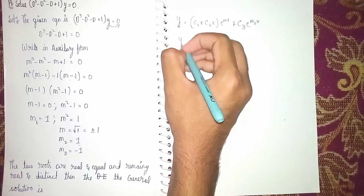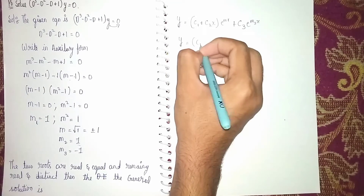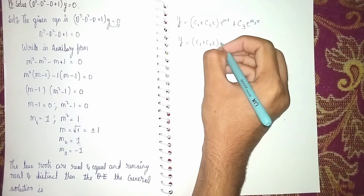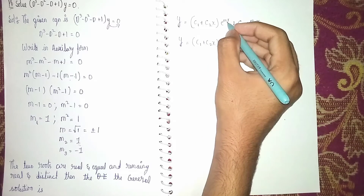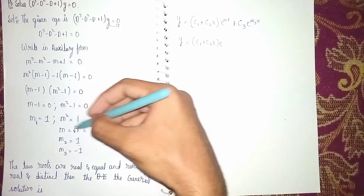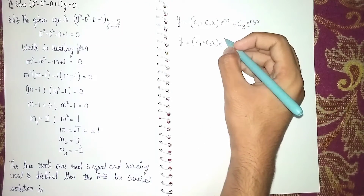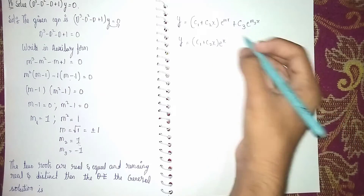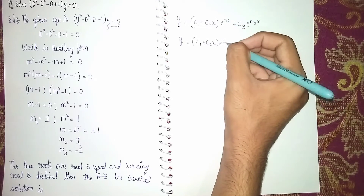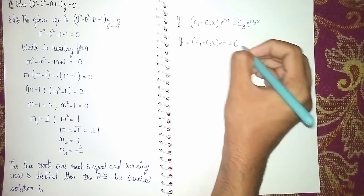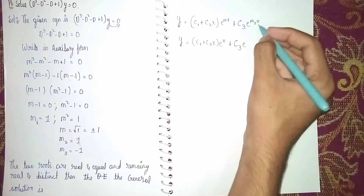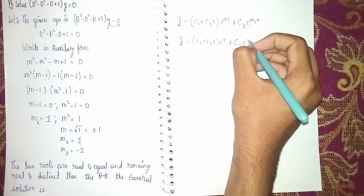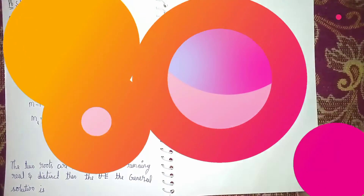Substituting the values: y = (c1 + c2·x)·e^(1·x) + c3·e^(-1·x), since m1 = m2 = 1 and m3 = -1. Simplifying, the general solution is y = (c1 + c2·x)·eˣ + c3·e^(-x). Thanks for watching.